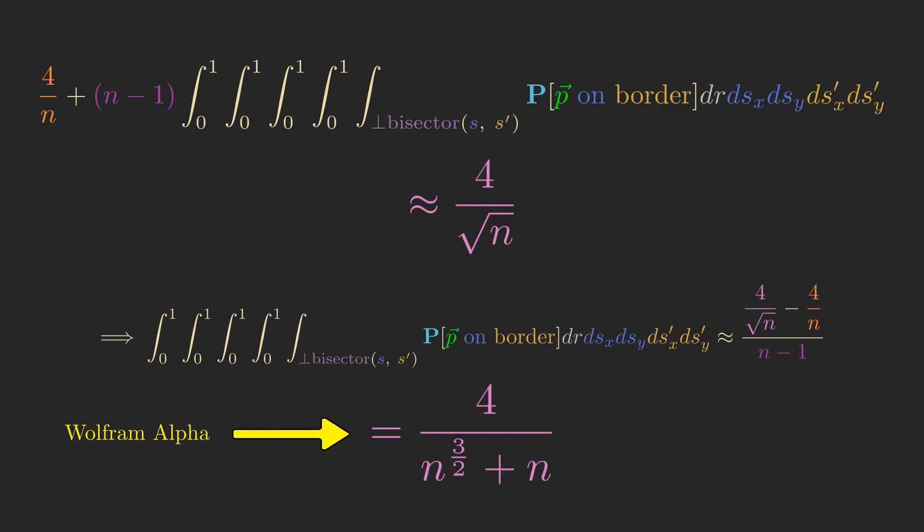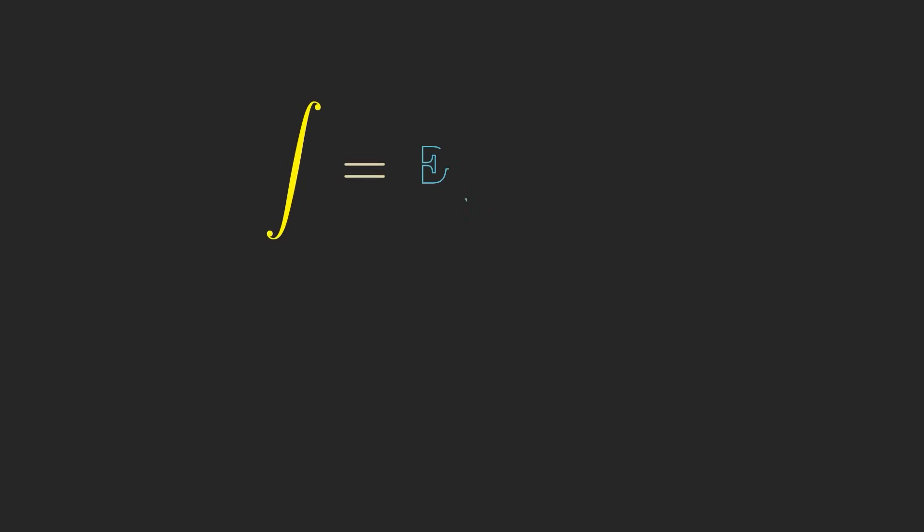This technique applies to other integrals too, by the way. Essentially any time you can show that an integral and another expression both represent the expected value of the same random variable, you can say they're equal to each other.